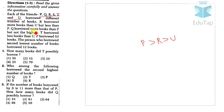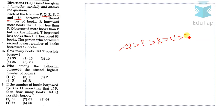Q borrowed more books than P but not the highest, so Q is above P but not at the top. T borrowed less books than U. The only person remaining is S, so S will come at the top of the order.